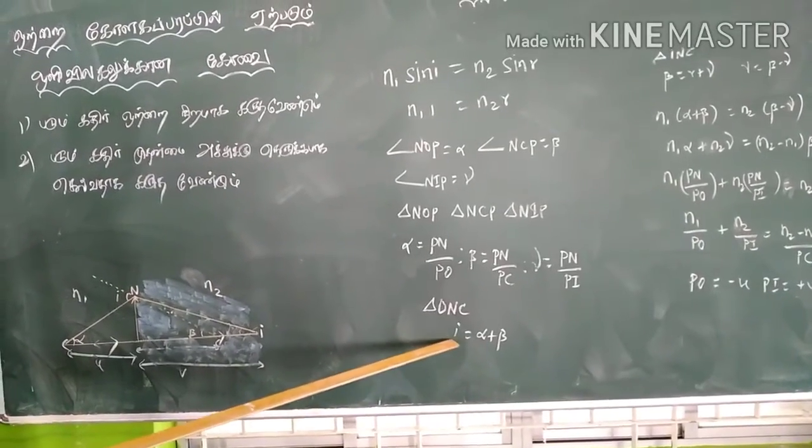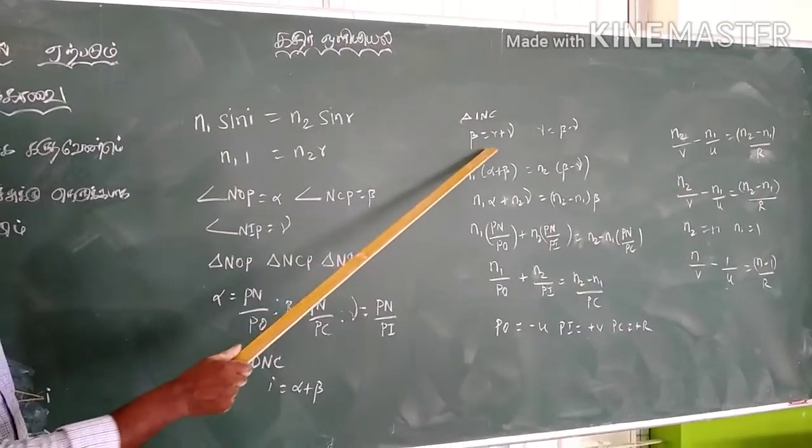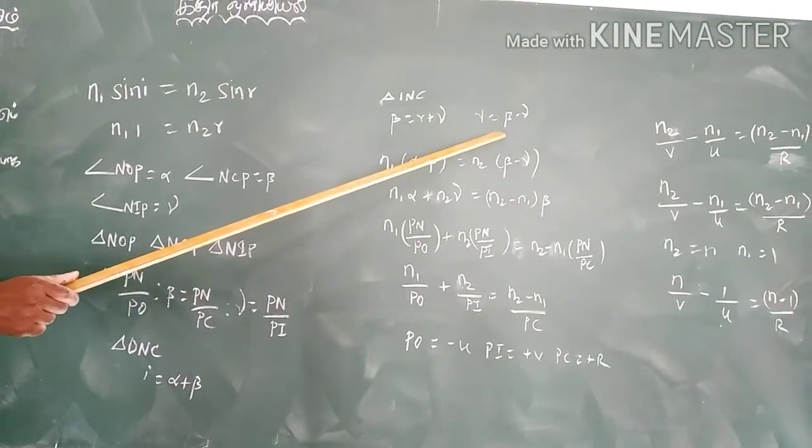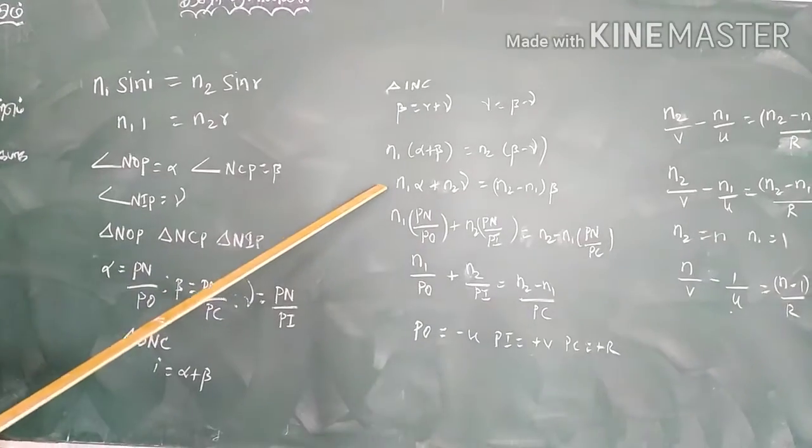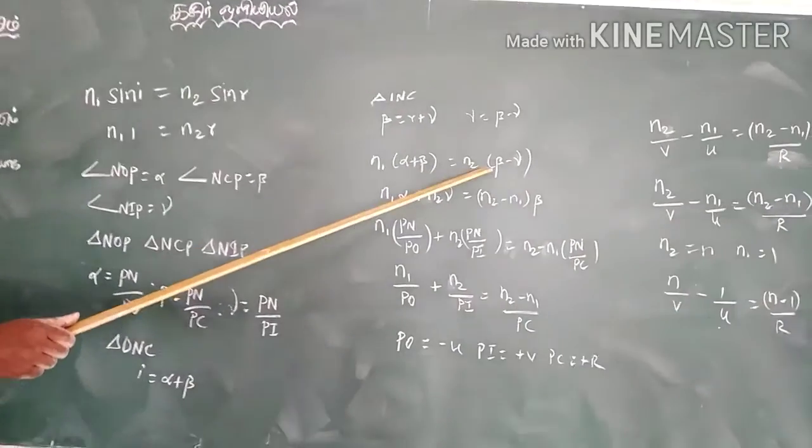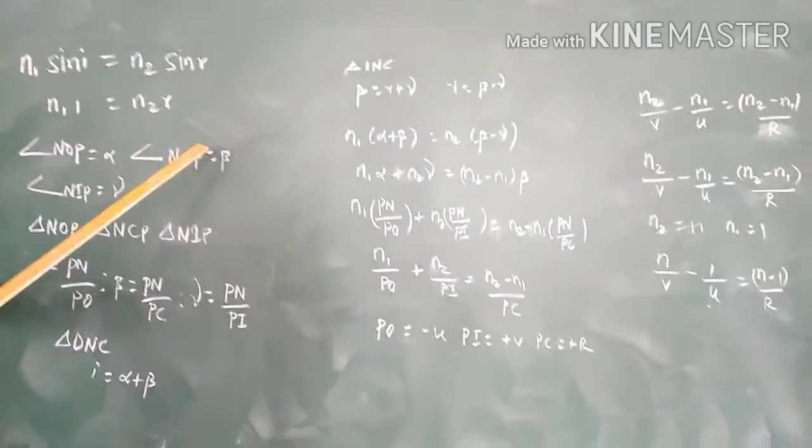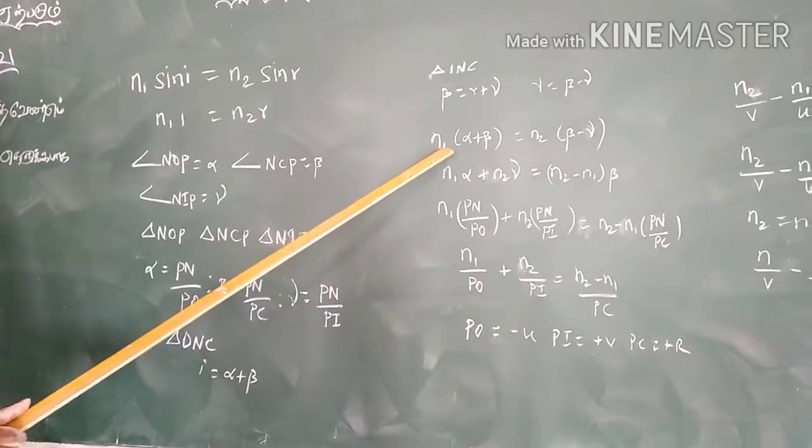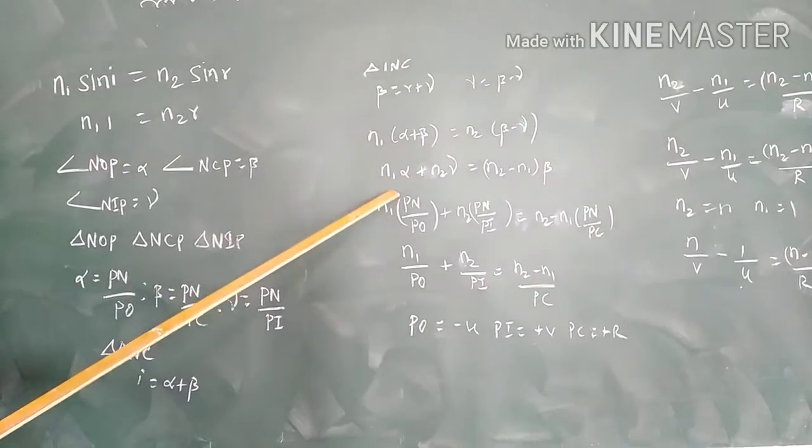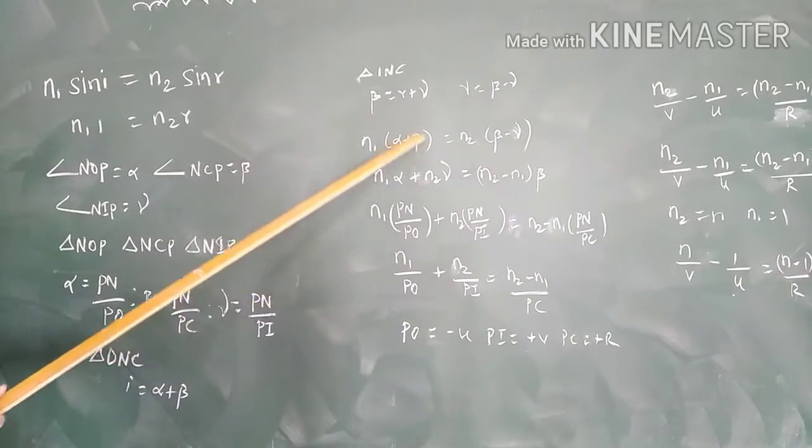We will have i equals alpha plus beta. Beta equals r plus gamma, so r equals beta minus gamma. Checking the equation: n1 times (alpha plus beta) equals n2 times (beta minus gamma). Simplifying: n1 alpha plus n2 gamma equals (n2 minus n1) beta.